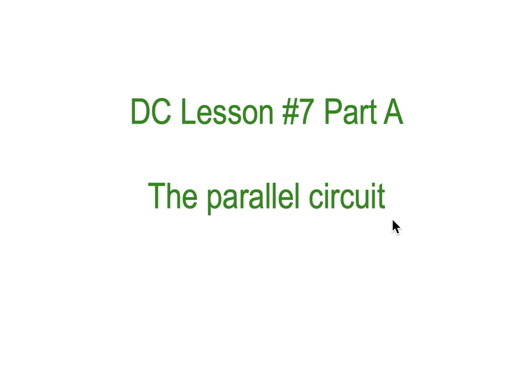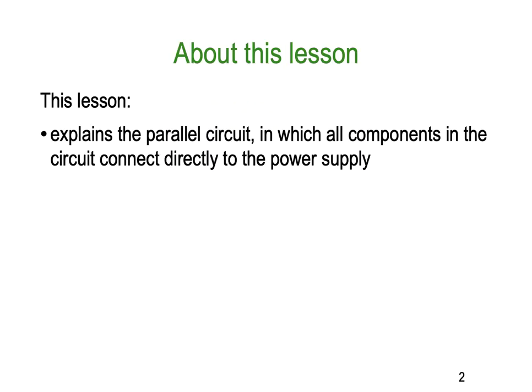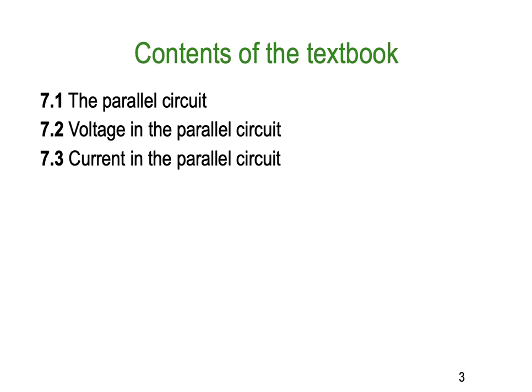We're into DC lesson 7 part A and we're going to be examining parallel circuits. This lesson explains parallel circuits in which all the components in a circuit are connected directly to the power supply. Using our textbook 'Electrical Principles' by Phillips, we're looking at sections 7.1, 7.2, and 7.3: the parallel circuit, voltage in the parallel circuit, and current in the parallel circuit.